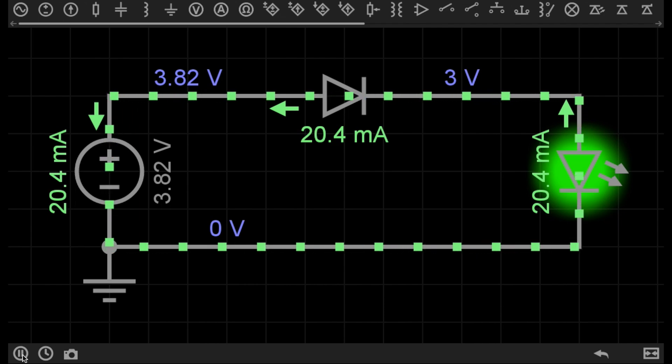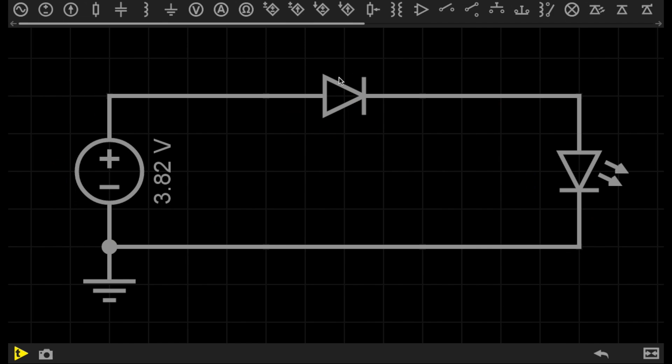However, if I now stop the circuit and disconnect this diode, turn it around to swap the polarity of it, and then reconnect it to the circuit, if I go ahead now and click play, nothing happens.